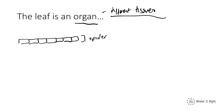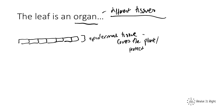The epidermal tissue is really there to cover the plant, and it therefore adds a layer of protection. There is an upper epidermis and also a lower epidermis, which covers the full leaf of the plant and adds that layer of protection.